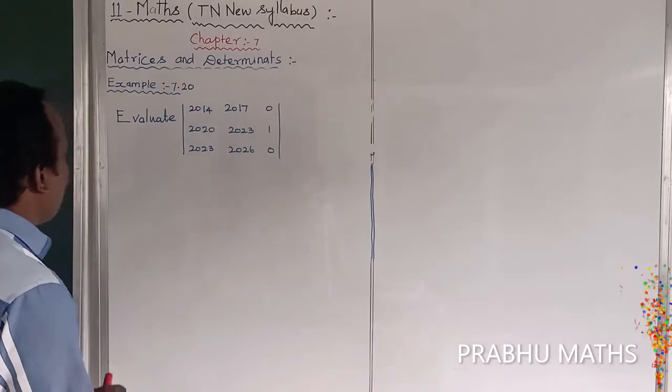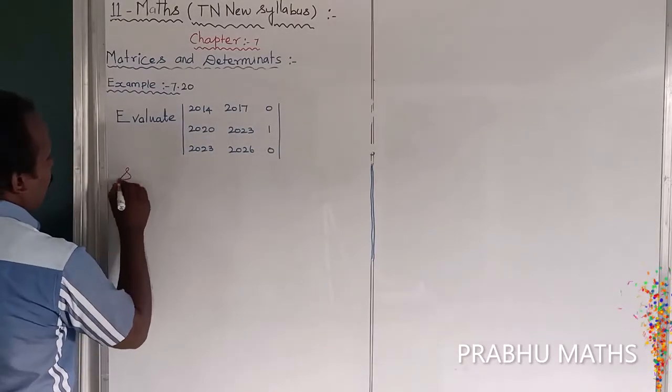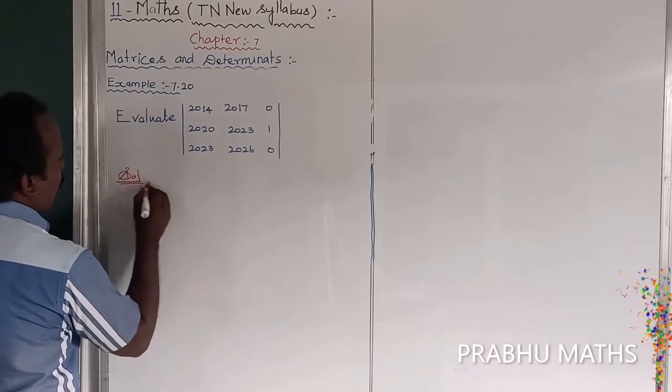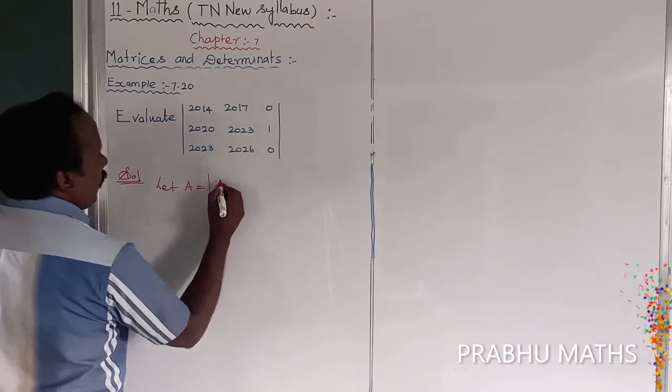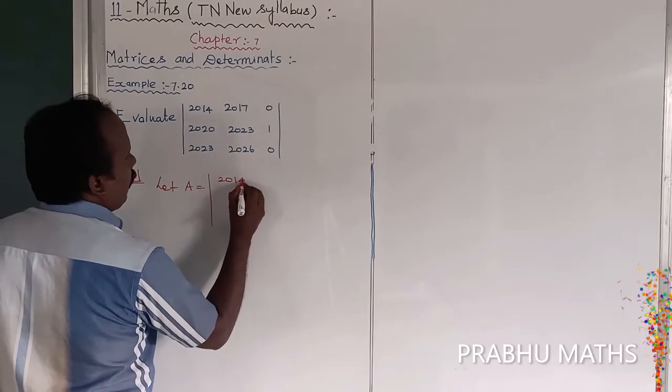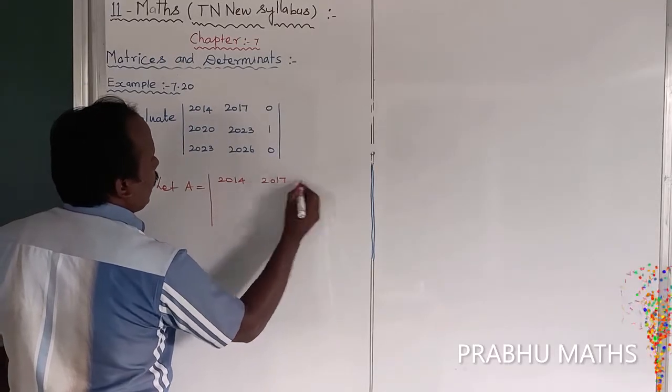So evaluate for this one. First of all, the given determinant, let us consider this the A value. So let the matrix be written as: 2014, next 2017, next one 0.